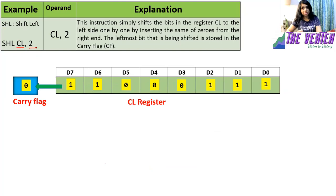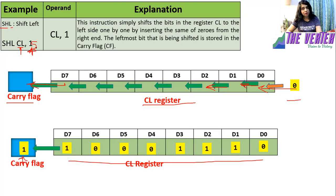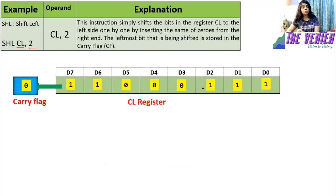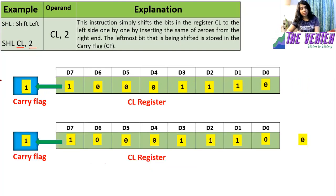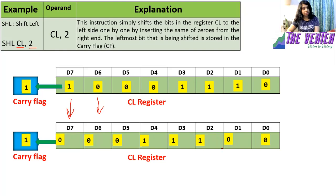This is SHL CL, 2 — same instruction SHL but with a count of 2, so we have to shift twice. First we shift once: D0 becomes empty so we enter zero there. After doing it once, our present status is as shown. Now one more time we shift towards left, and hence two zeros will enter from the right-hand side. If the count is four, then four zeros will enter from the right-hand side.